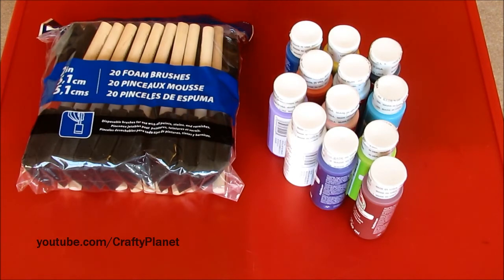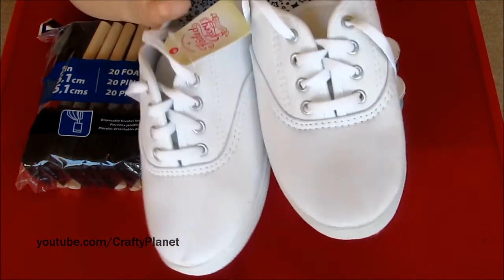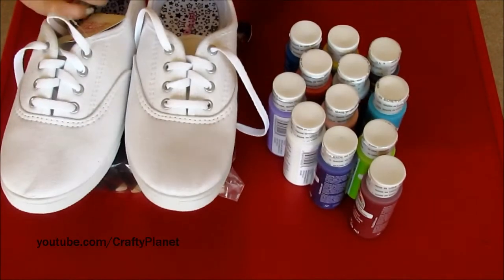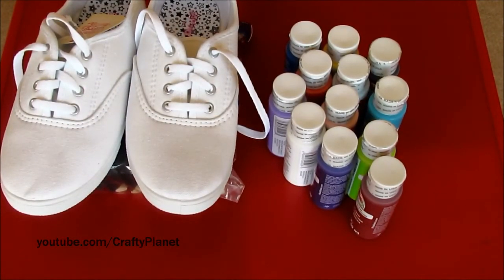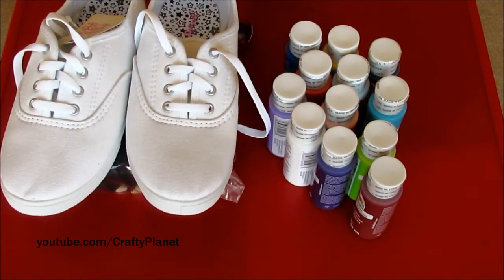And then the next thing I got was these shoes. They were like five dollars. They're kind of cheap, not very good quality, but I'm gonna paint them. That's the reason I bought the sponges, because I'm gonna do a galaxy pattern and I want to blend it around.